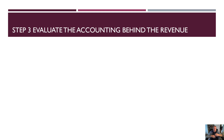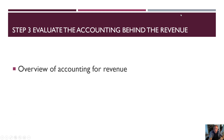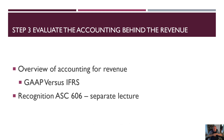Revenue drives just about everything else. So when we understand the whys, the next thing we need to consider is what's the accounting behind the revenue. We're going to take a look at an overview of accounting for revenue, GAAP versus IFRS, and then recognition under ASC 606, which is a fairly new thing. There is a separate lecture on that that you should have already reviewed, and it does have an impact on companies.